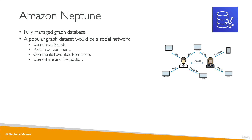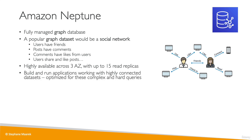This is why Neptune is a great choice of database when it comes to graph datasets. Neptune has replication across three availability zones, up to 15 read replicas. It's built and used to run applications with highly connected datasets, like a social network.